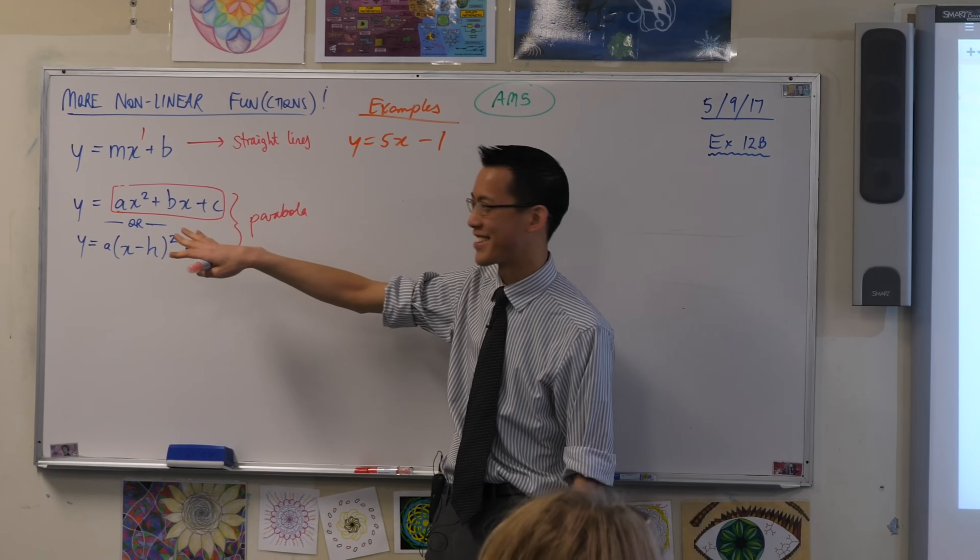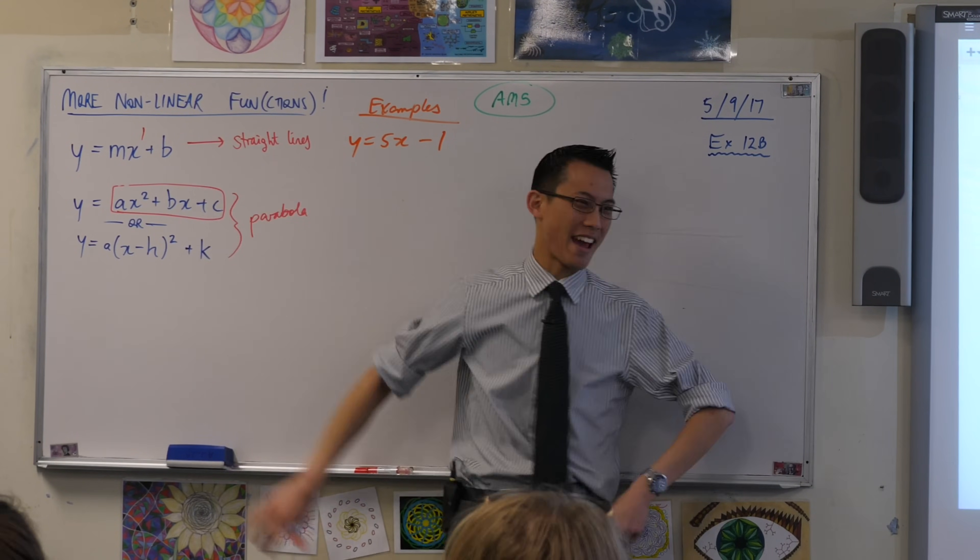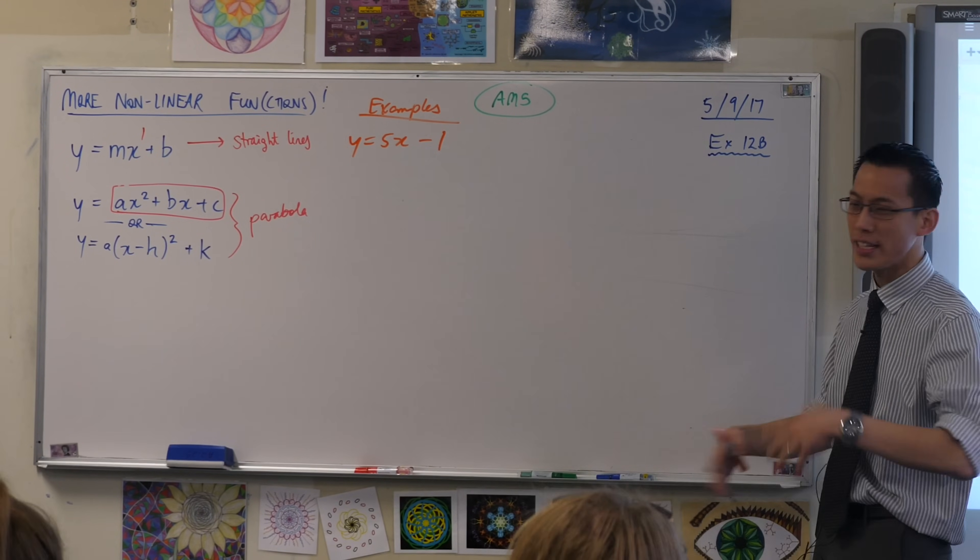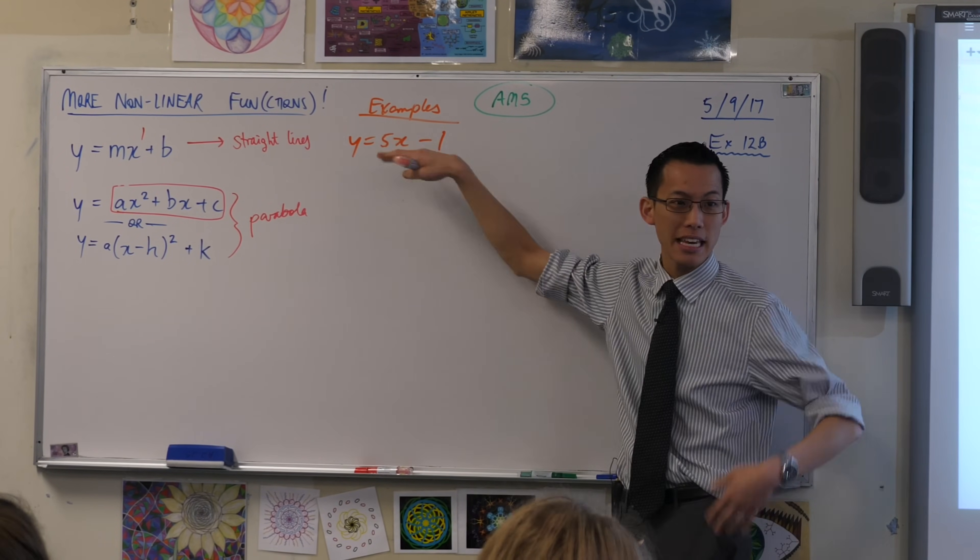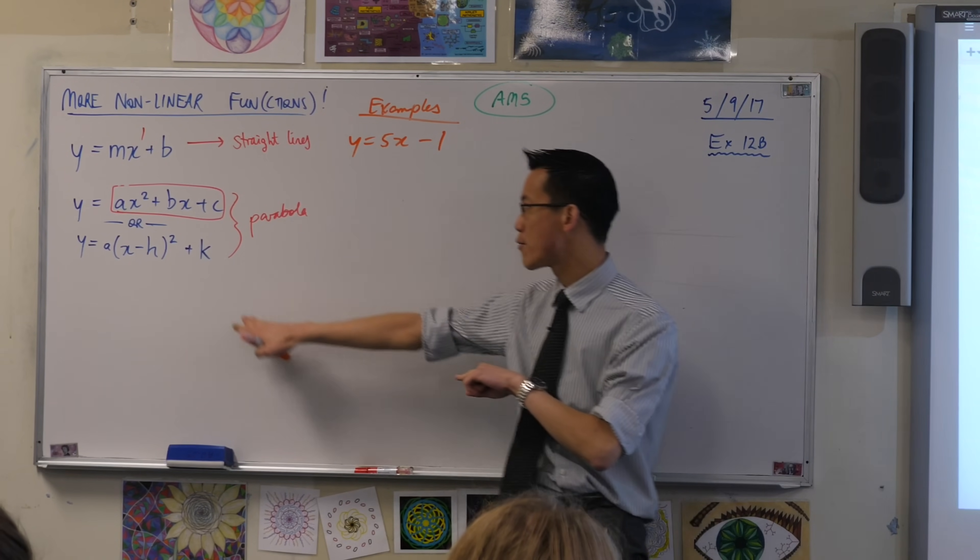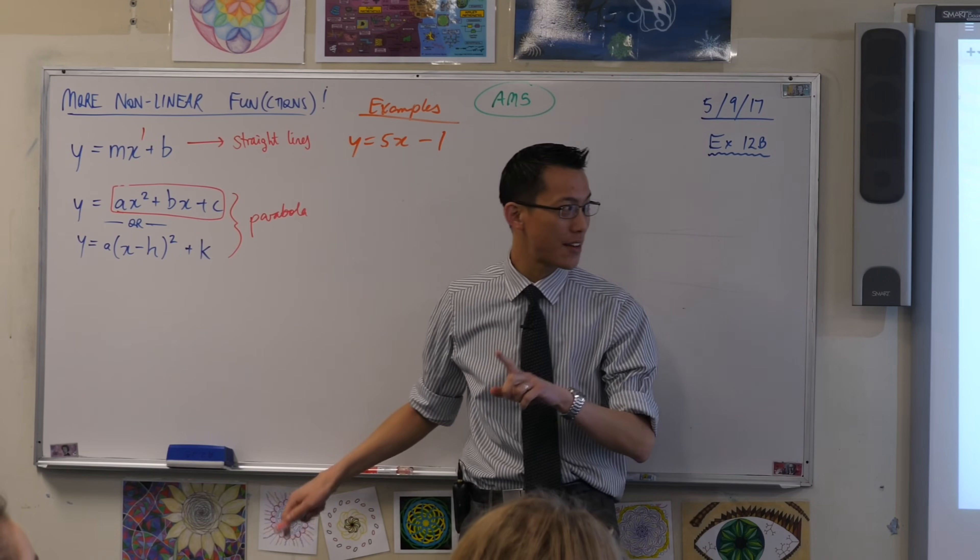This form here, ax² plus bx plus c, it's a mess. It's terrible. It's really hard to work with. There's very little that you can see immediately. These are important features. And so that's why we rewrite it like this. So these guys have names.